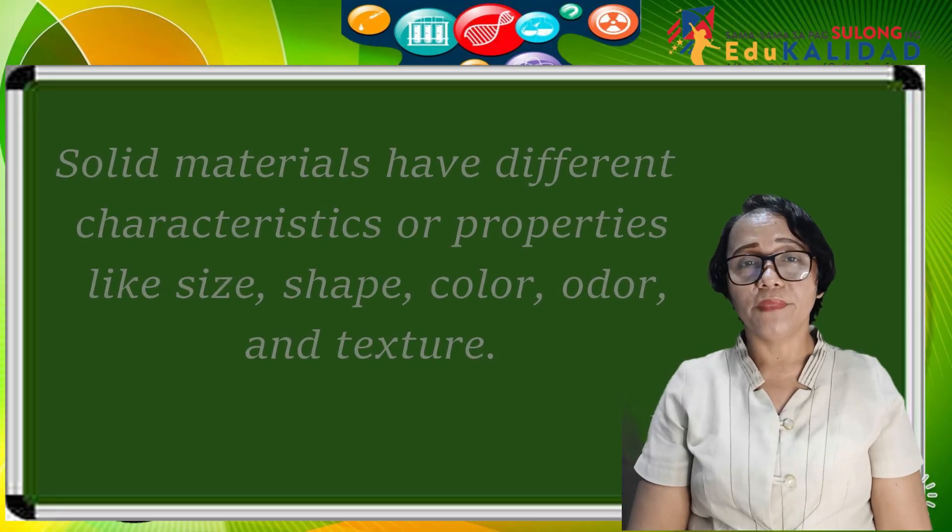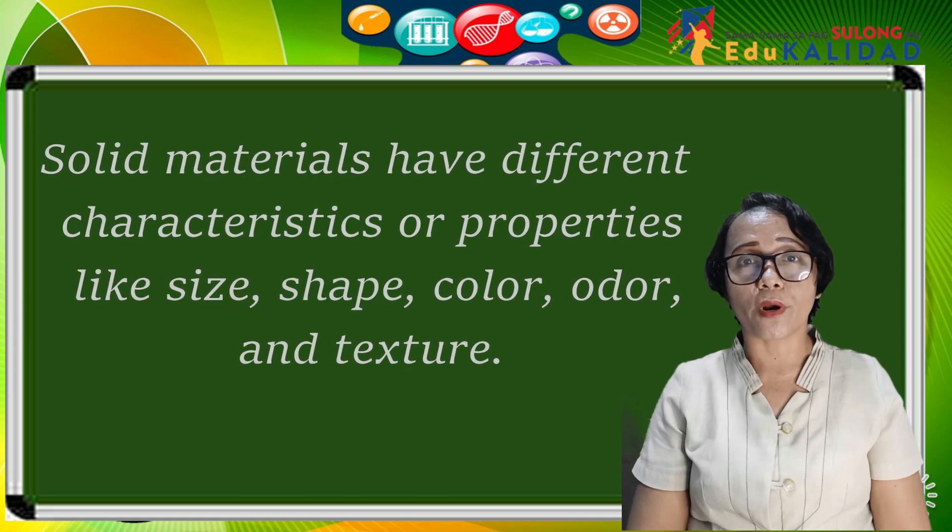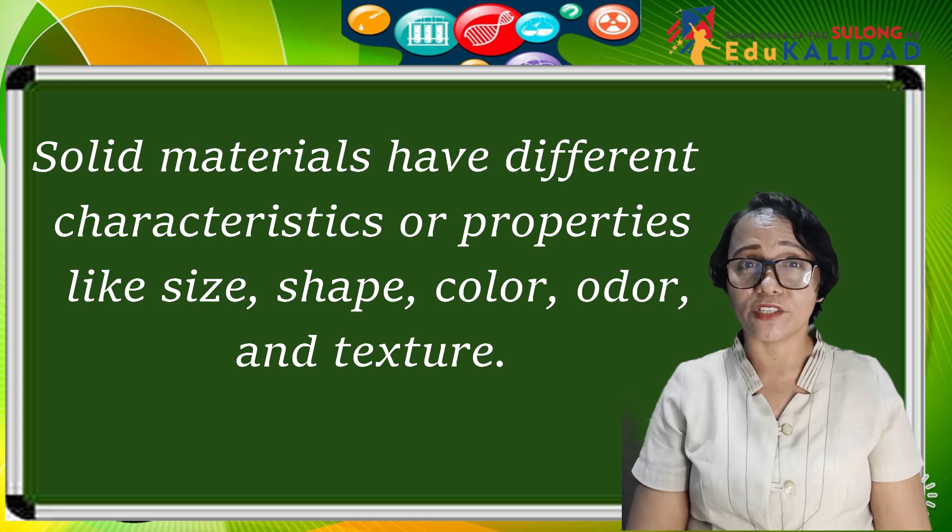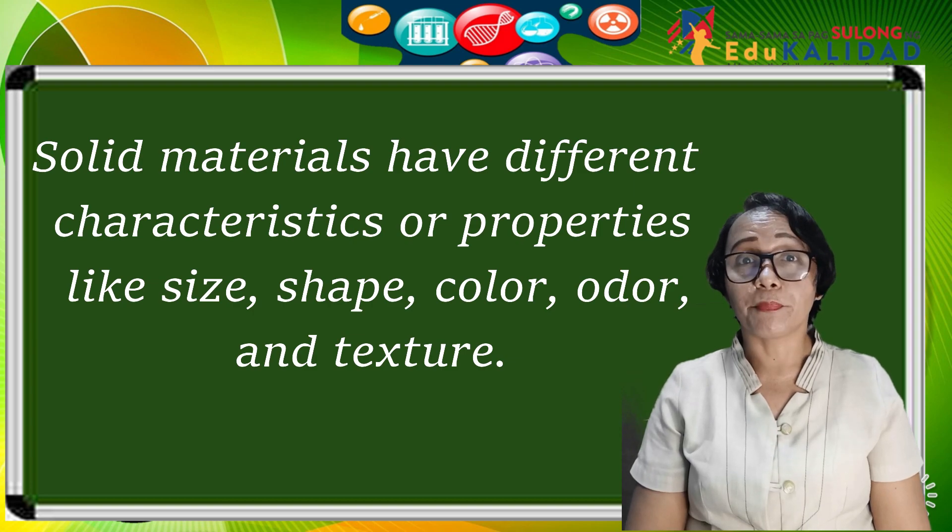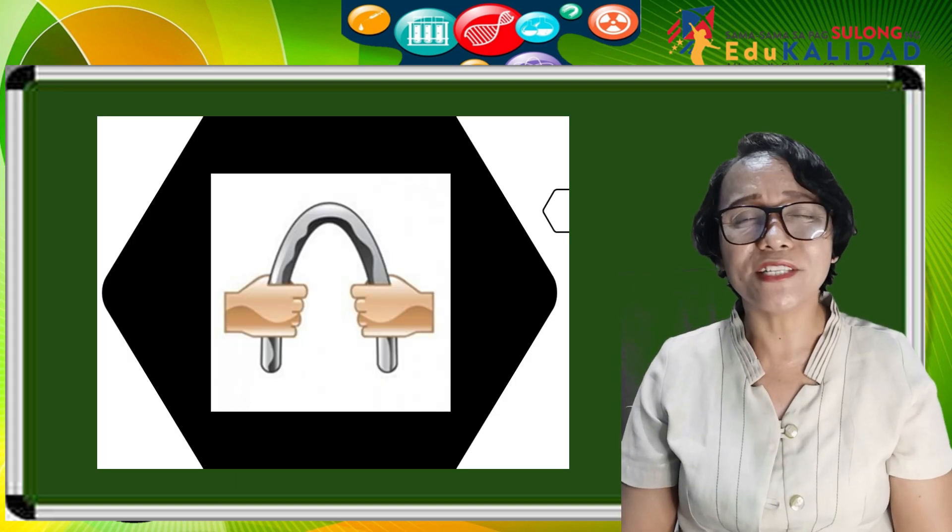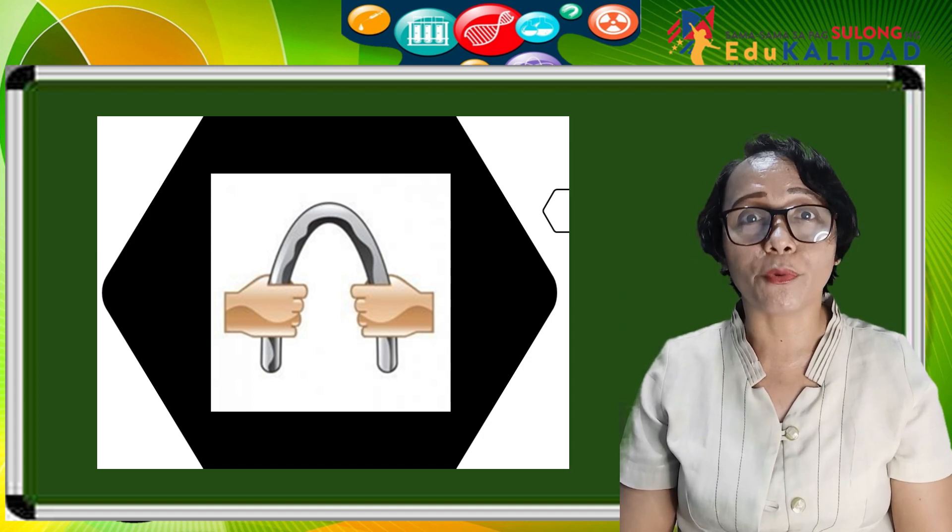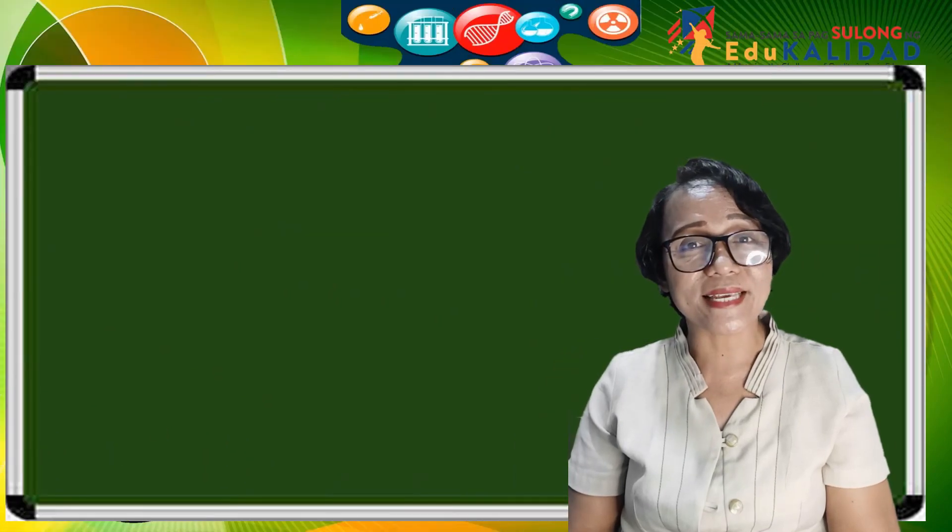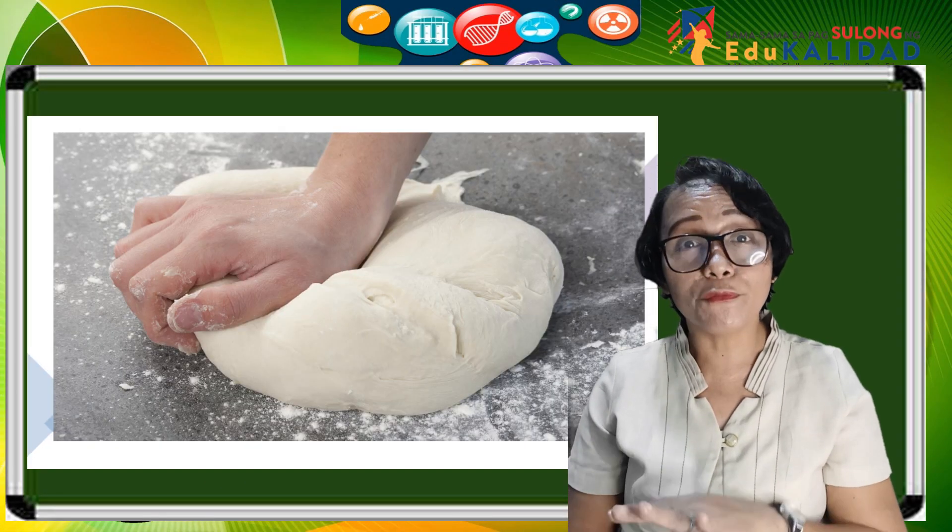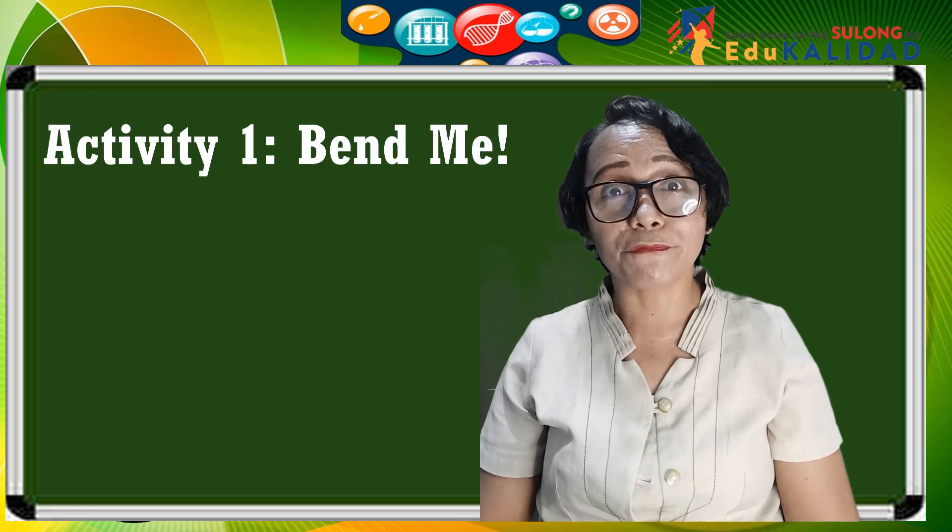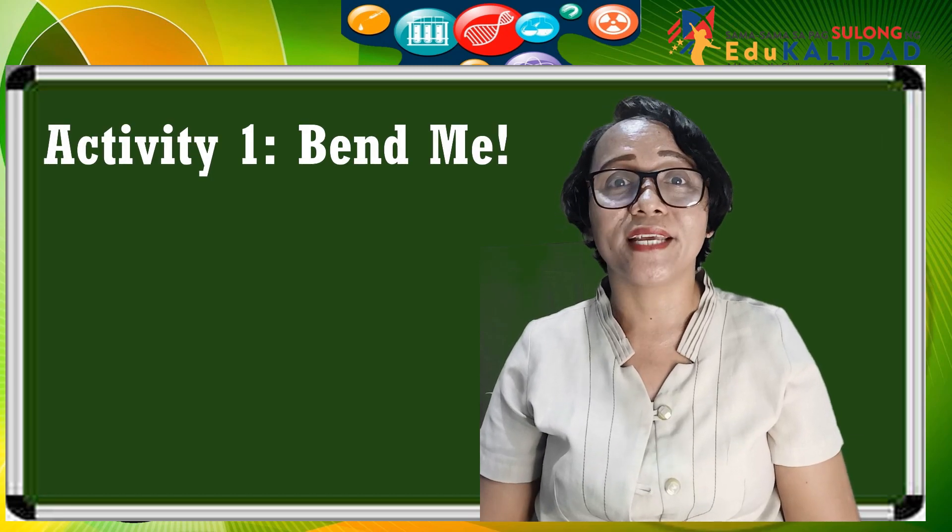Solid materials have different characteristics or properties like size, shape, color, odor, and texture. But these properties of solid materials can be changed by pressing and bending. Bending means to force an object from a straight form into a curve or angular one, while pressing is applying force to flatten or smoothen the object. To further enhance our understanding about bending, let us perform activity number one: Bend Me.